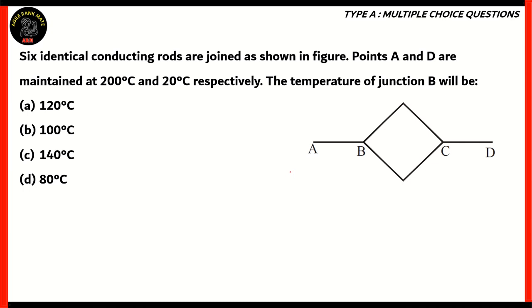Now let's look at the final question of this episode. Six identical conducting rods are joined as shown in the figure. Points A and D are maintained at 200°C and 20°C, respectively. The temperature of the junction B, we need to find the temperature in this particular spot. So how do we solve this question?